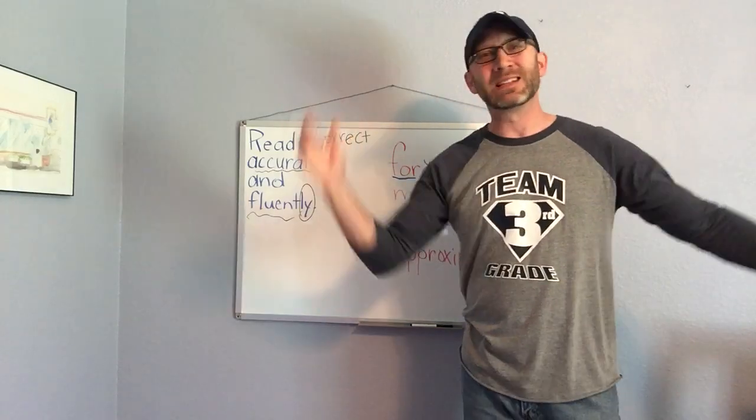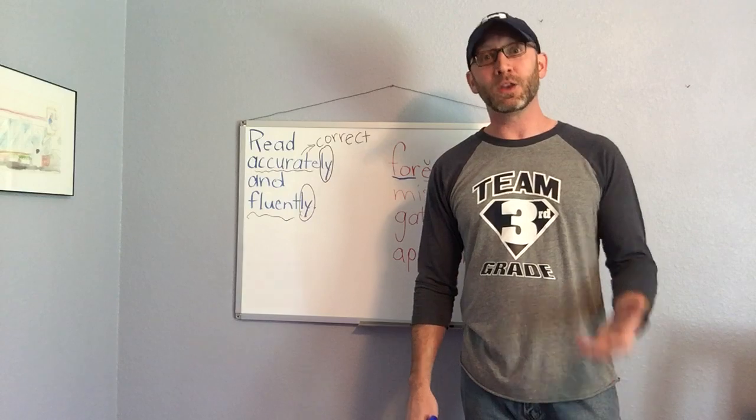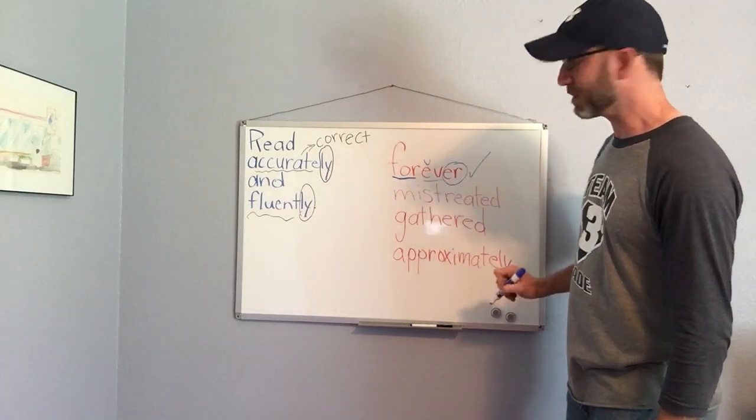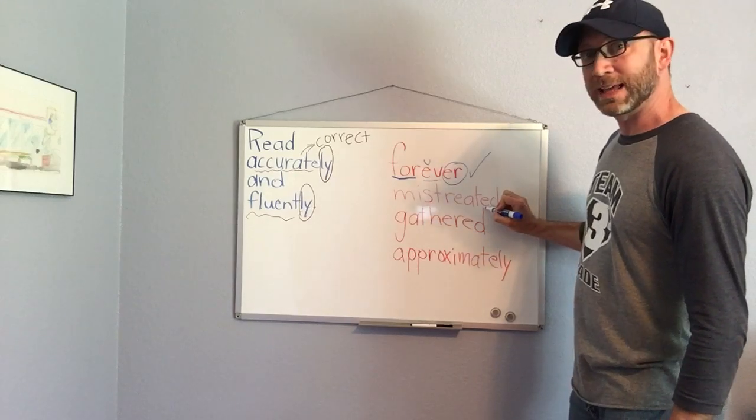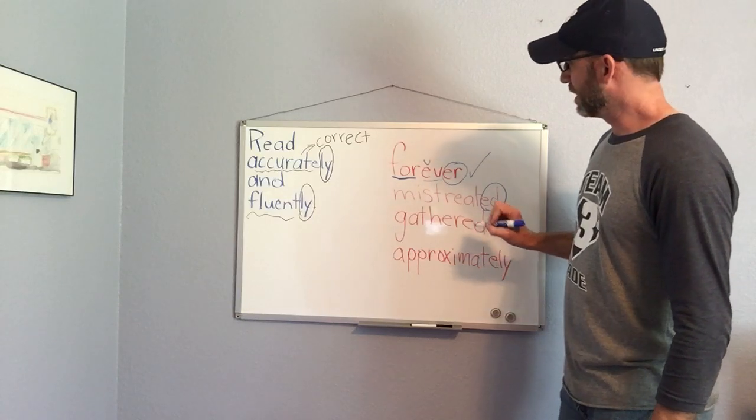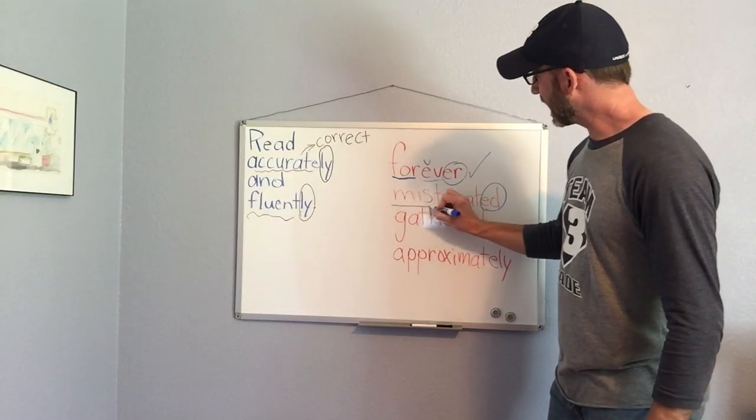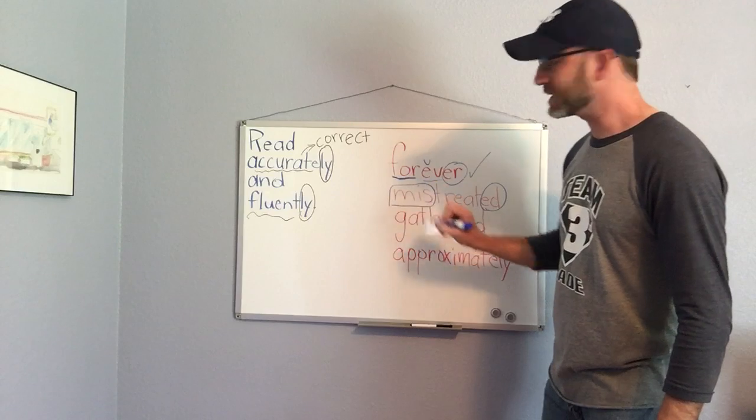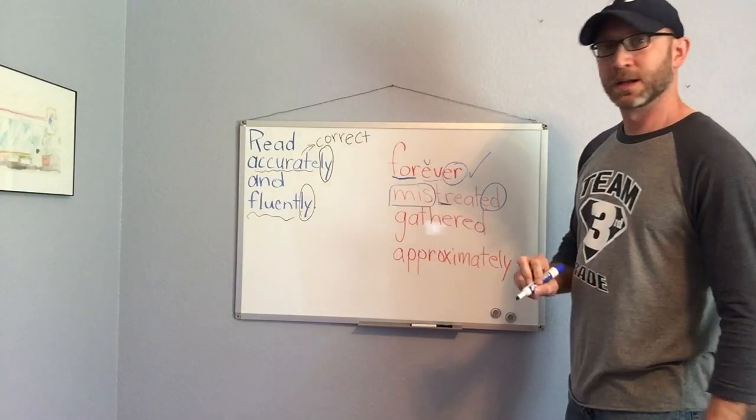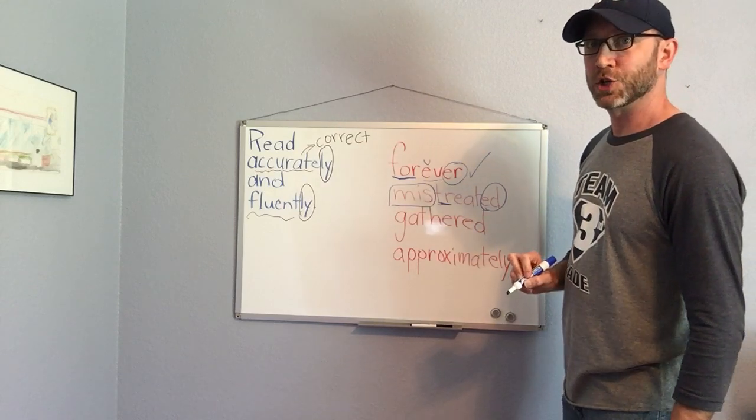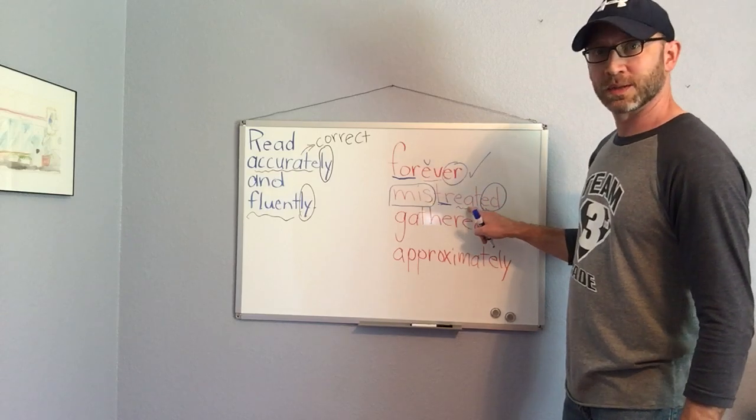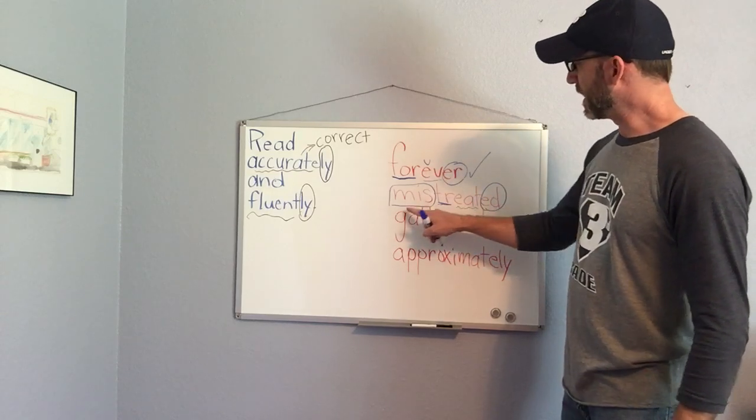Now you may be saying Mr. Atkins, I know that word, that was an easy one, and you're right it was, but all words are not that way, so let's keep practicing. Look at this word with me. Looking at the end I see an ed ending, looking at the beginning I see a prefix mis. Mis, tr is a blend, true. Mis, true, and here we see a word eat. Mistreated.